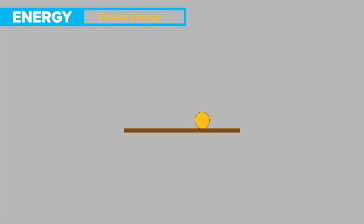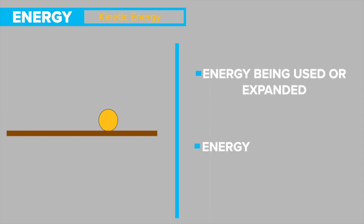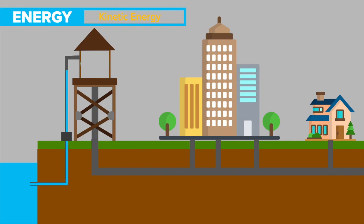So kinetic energy can be defined as energy being used or expended, or simply known as energy of motion. For example, water pumped into an elevated reservoir to be used at a later time has potential energy. When the water is released, this potential energy is converted into kinetic energy because the water is now in motion.